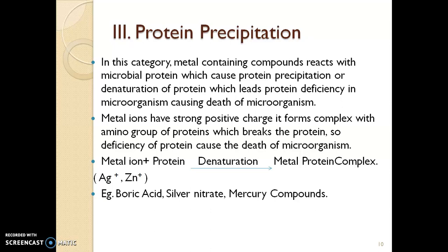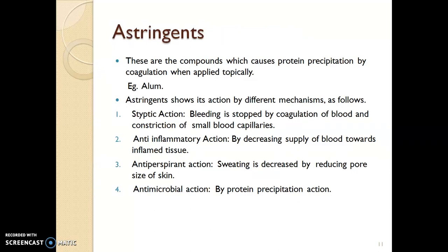So these are the three different mechanisms: first, oxidation of microbial protein; second, halogenation of microbial protein; and third, precipitation of microbial protein. The next class of topical agents is astringents. These are compounds which cause protein precipitation by coagulation when applied topically. Unlike the second class where microbial protein precipitation occurs, in astringents the precipitation of human protein occurs. Example of this class is alum.